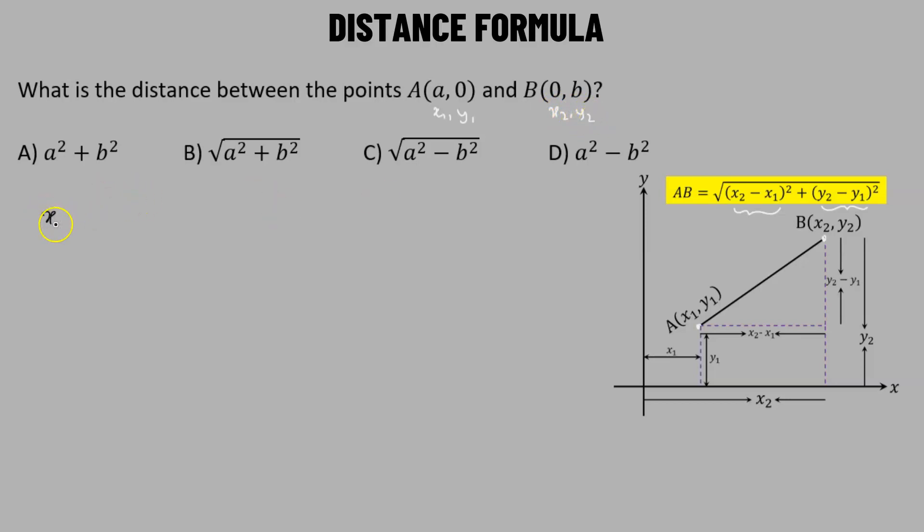So let us first try to find out the value of x2 minus x1. Now clearly x2 corresponds to value 0, and x1 corresponds to the value a. So 0 minus a, that's going to be negative a.